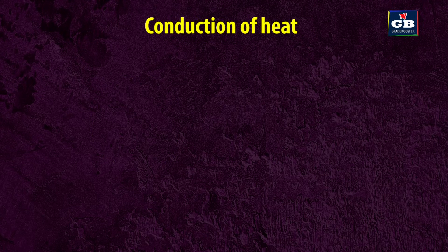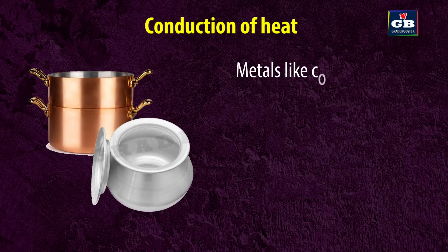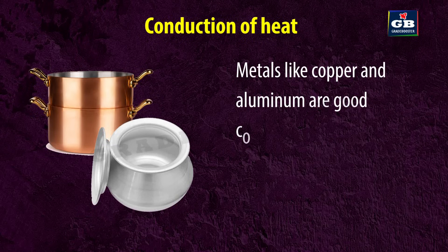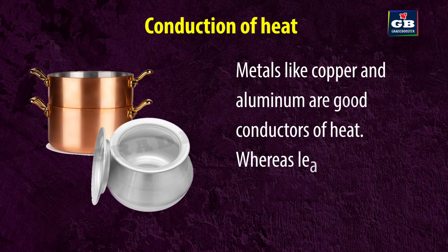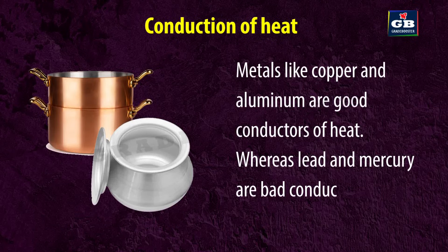Conduction of heat. Metals like copper and silver are good conductors of heat, whereas lead and mercury are bad conductors of heat.